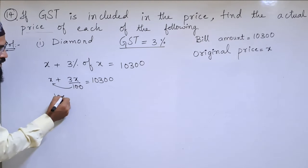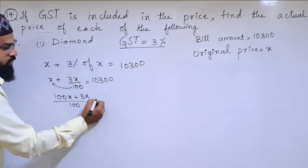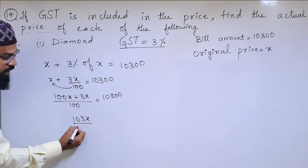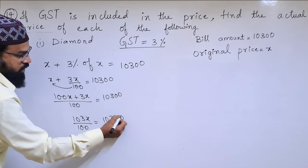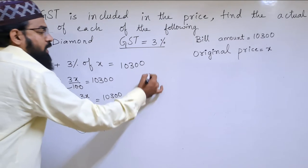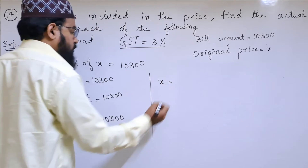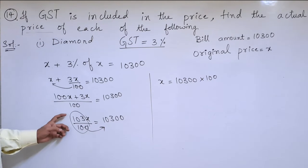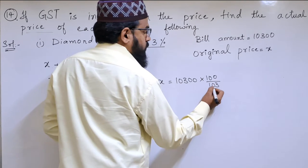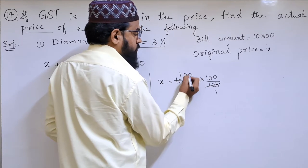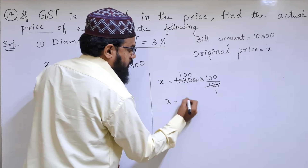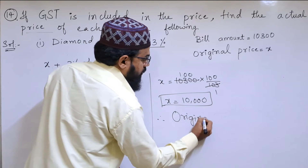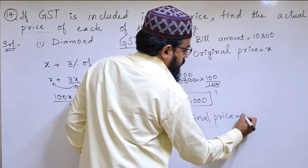Multiplying through: 100x plus 3x by 100 equals 10,300. So 103x by 100 equals 10,300. Sending 100 to the other side, x equals 10,300 into 100 by 103. The 103s cancel, giving x equals 100 into 100, which is 10,000. Therefore, the original price is ₹10,000.